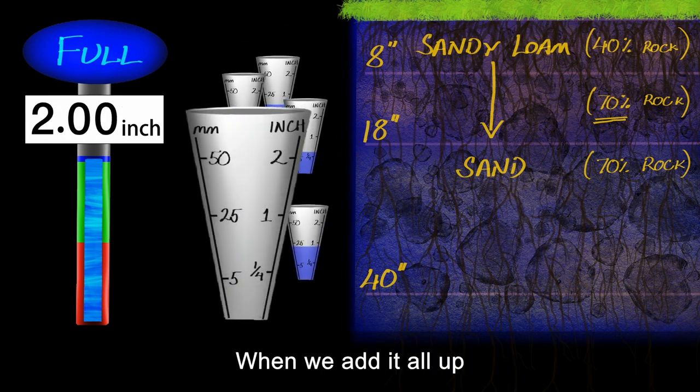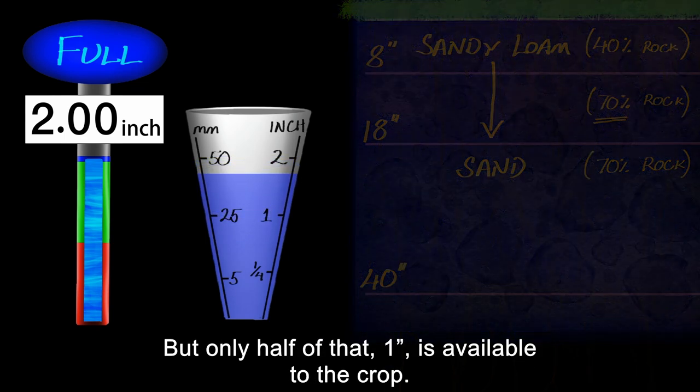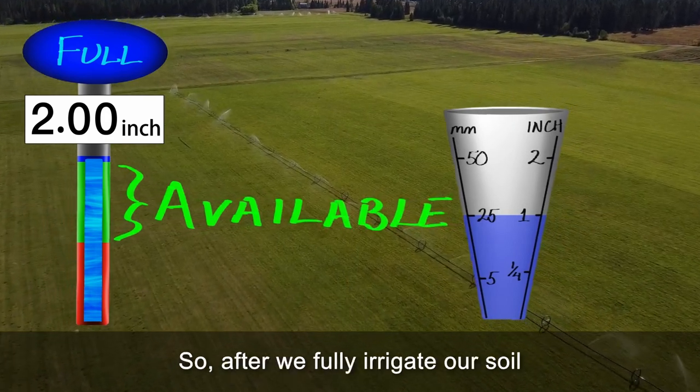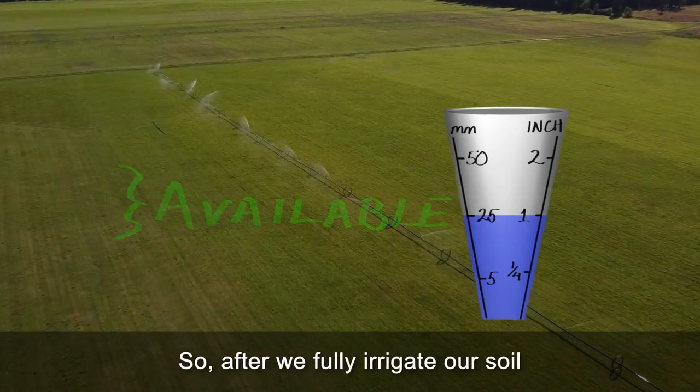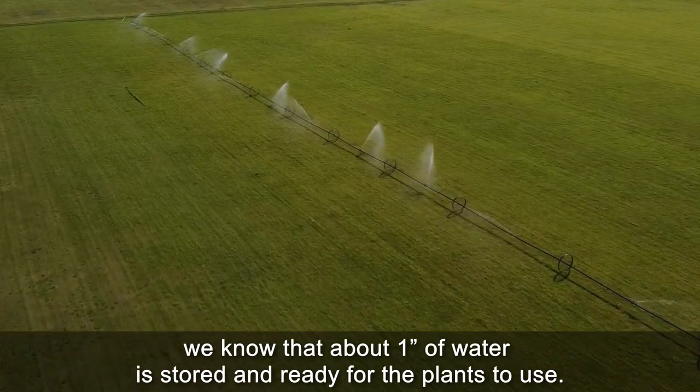When we add it all up, the total water storage of the soil is about two inches. But only half of that, one inch, is available to the crop. So after we fully irrigate our soil, we know that about one inch of water is stored and ready for the plants to use.